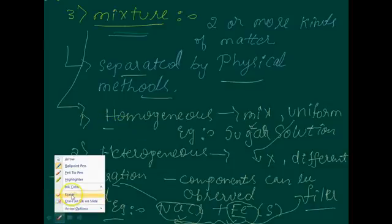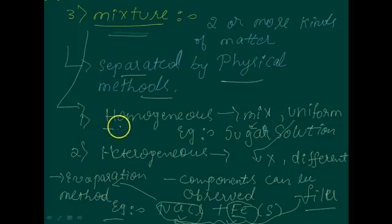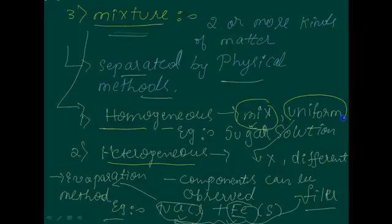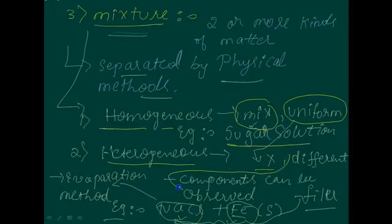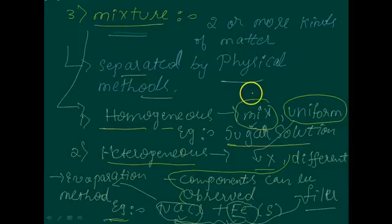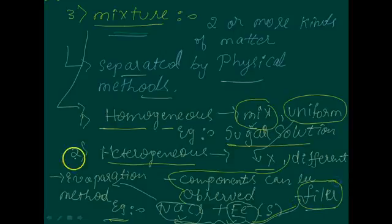Mixture can be separated by physical methods. It is divided into homogeneous mixture — where components completely mix and composition is uniform, example: sugar solution — and heterogeneous mixture — where composition is not uniform and different components can be observed, example: sodium chloride and iron, separated by filtration and evaporation.